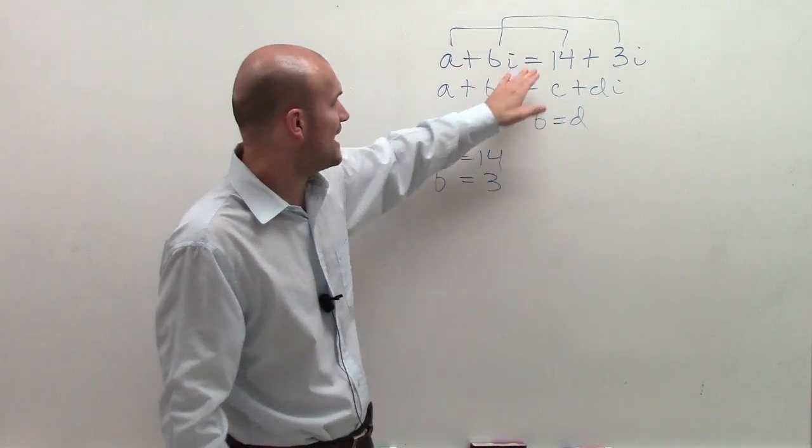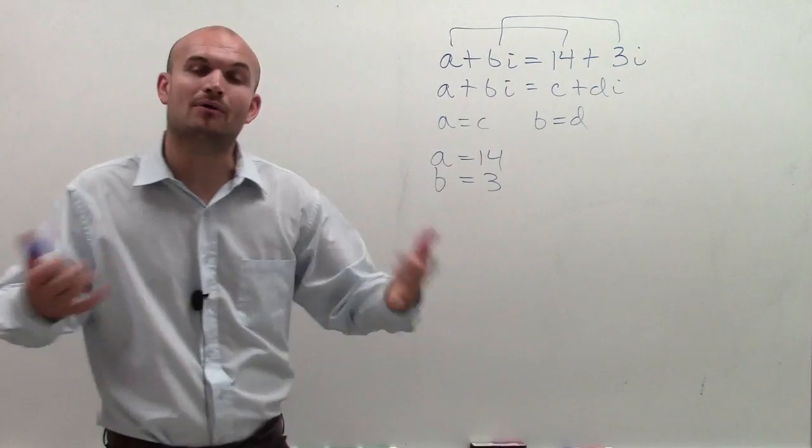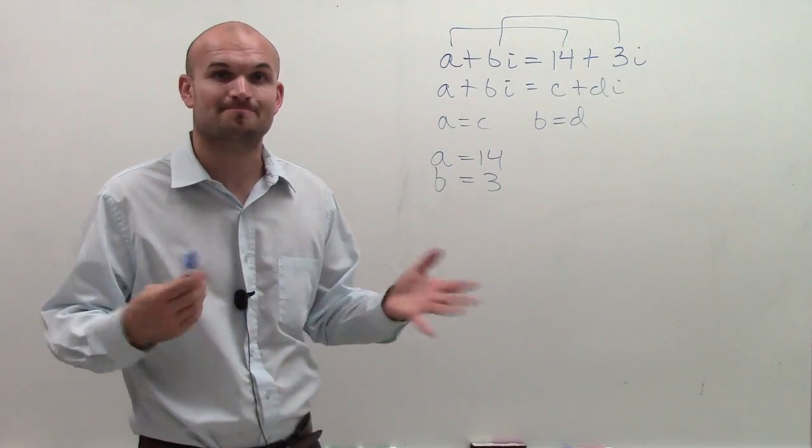So when A equals 14 and B equals 3, I will have equality of complex numbers. There we go.